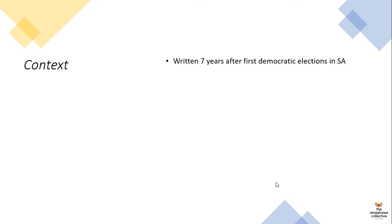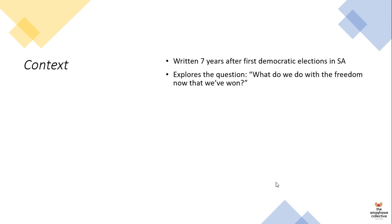Nothing But The Truth was written in the contemporary period in 2001, seven years after the first democratic elections in South Africa. Democracy in South Africa came about in 1994, and this year we celebrate 26 years of democracy. The play explores the question: what do we do with the freedom now that we've won? Now that we've won the democratic right to be free, what do we do with that freedom? It looks at the possibilities that come about with freedom — what do we do with it now that we actually have it.